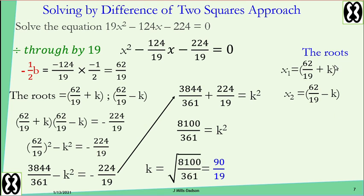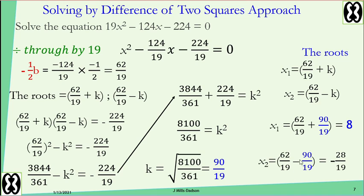Since the roots are 62 over 19 plus k and 62 over 19 minus k, substitute k equals 90 over 19. The first root gives 8, and the second gives negative 28 over 19. We've successfully used this method to solve an equation with large numbers.